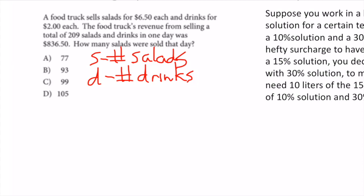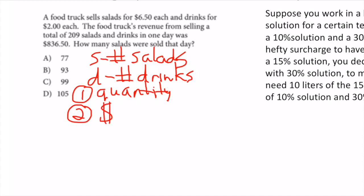The easiest way to think about these questions: you need two equations. Most of the time one equation deals with the quantity — how many of something — and the second equation deals with money, percentages, or weight. The first equation typically deals with quantity.